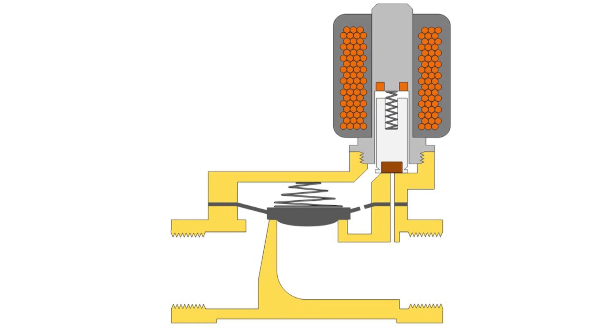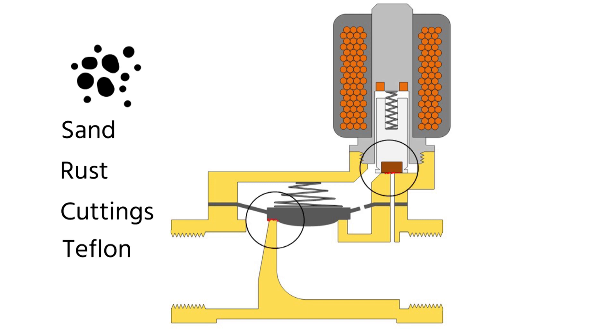Solenoid valves are very sensitive to dirt particles in the fluid. If you have a problem with a leaking solenoid valve, the reason is usually due to small particles of sand, rust, cuttings, or pieces of Teflon tape on the valve seat or in orifices.